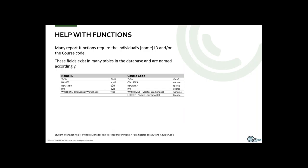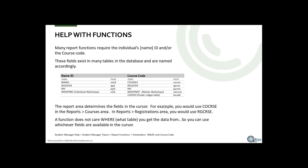The name ID appears in several different fields because it's used as a common field across many areas. In the Names table it's called nmid; in Registrations it's rgid; in Payments it's pyid. Basically, the first two letters indicate the file the field comes from and the last two letters 'id' indicate it's the name ID. For course code, crse is typically the abbreviation, and co comes from the course table, rg from the register.